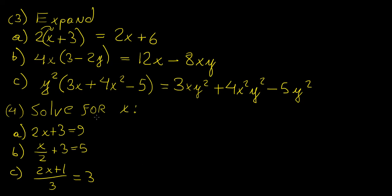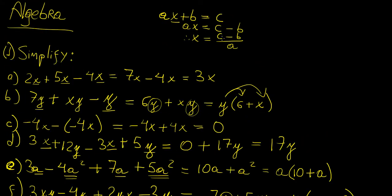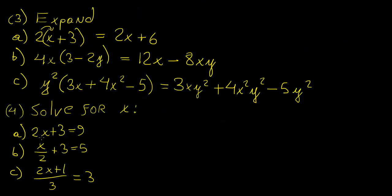Now we're going to solve for x — this is the major application of algebra: solving equations and inequalities, which we'll study more later. Starting with the first equation, we need to get rid of extra terms on the left-hand side. This 3 is annoying, so we subtract 3 from both sides, leaving 2x equals 6. Then we divide both sides by 2, giving x equals 3.